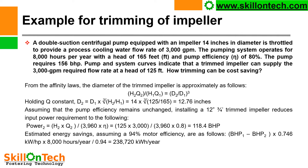From the affinity laws, the diameter of the trimmed impeller is: D2 = D1 × ∛(H2/H1) = 14 × ∛(125/165) = 12.76 inches. Assuming pump efficiency remains unchanged, installing a 12.76-inch trimmed impeller reduces input power to: P2 = (H2 × Q2) / (3960 × efficiency) = (125 × 3000) / (3960 × 0.8) = 118.4 BHP.